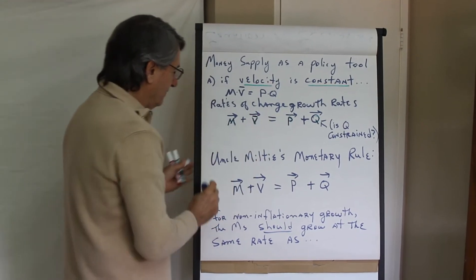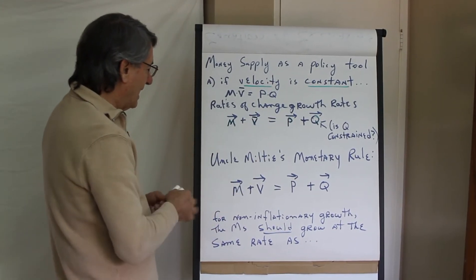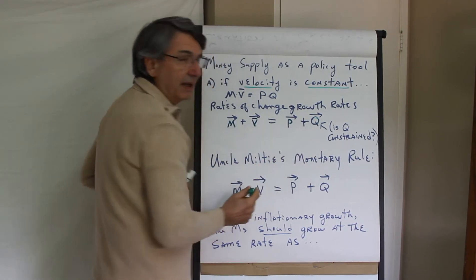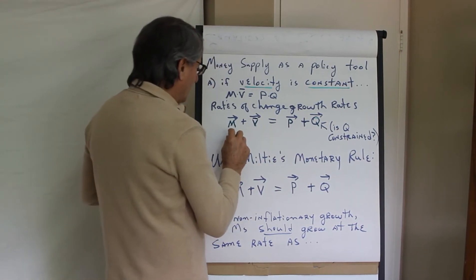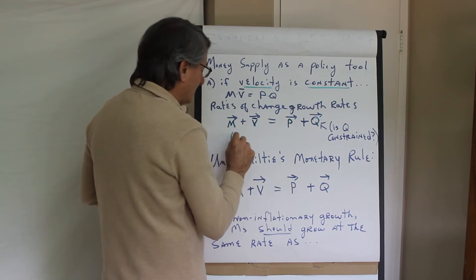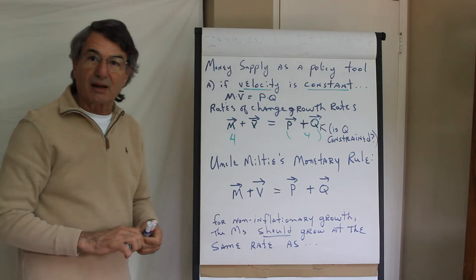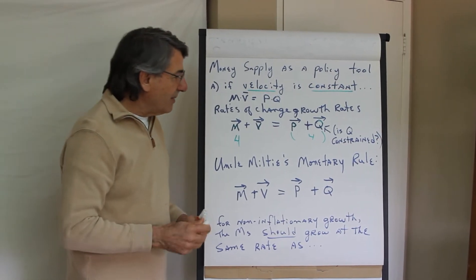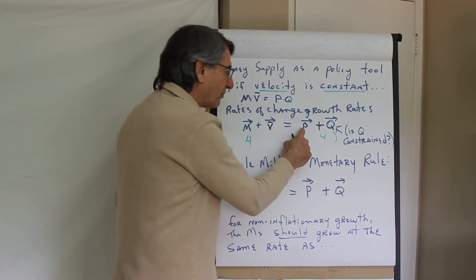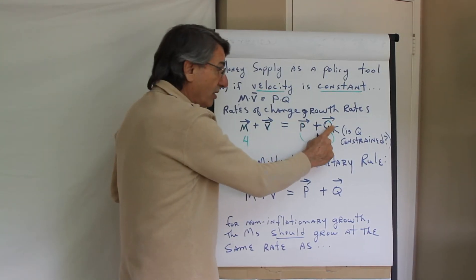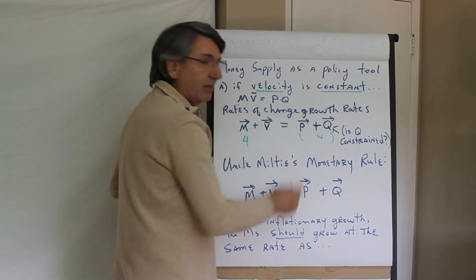If velocity is constant, then the rate of change of velocity is zero. It's constant. That means that the rate of change of the money supply will show up in nominal GDP. So if the money supply grows at 4% per year, nominal GDP must grow at 4% per year.